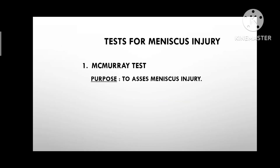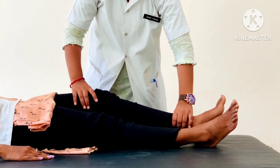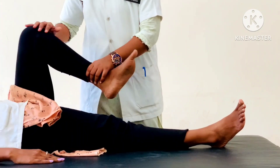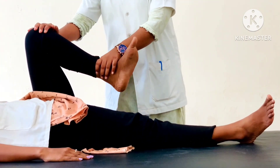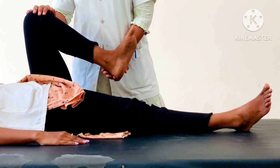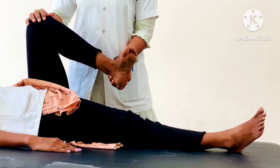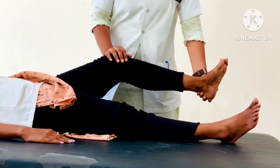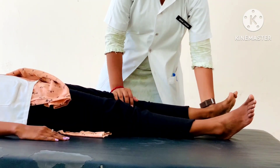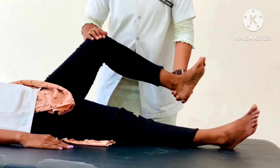Purpose: to assess meniscus injury. Patient Position: supine lying with knee completely flexed, heel to buttock. Therapist Position: beside the tested side. The examiner rotates the tibia medially and extends the knee to check lateral meniscus injury. The process is repeated several times.